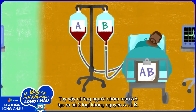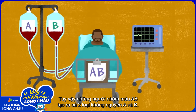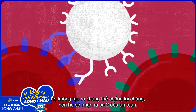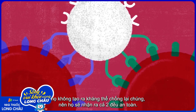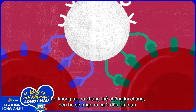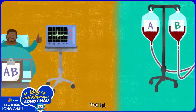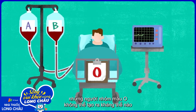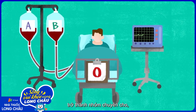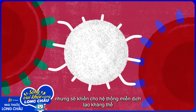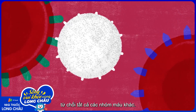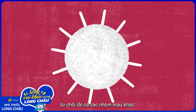Because people with type AB blood produce both A and B antigens, they don't make antibodies against them, so they will recognize either as safe, making them universal recipients. On the other hand, people with blood type O do not produce either antigen, which makes them universal donors, but will cause their immune system to make antibodies that reject any other blood type.